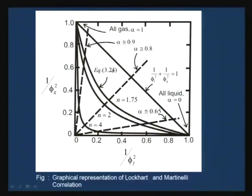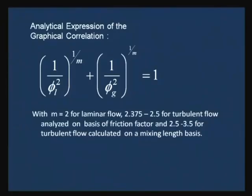The graphical correlation has been expressed in terms of a graph showing the correlation between 1/φ_l² and 1/φ_g², and subsequently we derived the analytical expression. This analytical expression takes different forms depending on whether the flow in the two phases is laminar or turbulent, and also for turbulent flow whether we use a Blasius-type equation or a mixing length basis. The mixing-length-basis case was your home assignment, and today I will complete what I could not finish yesterday before going into further discussions regarding improvements to this correlation.